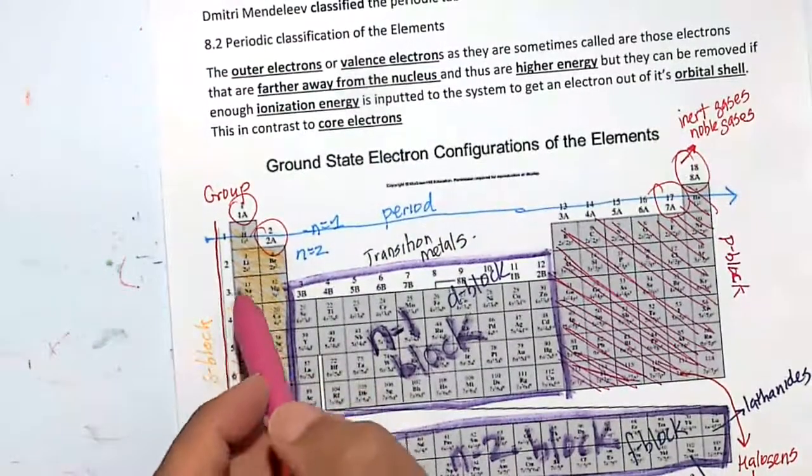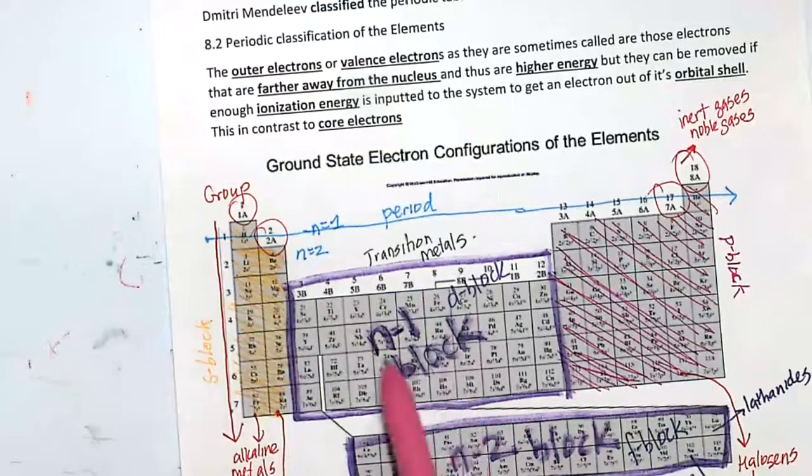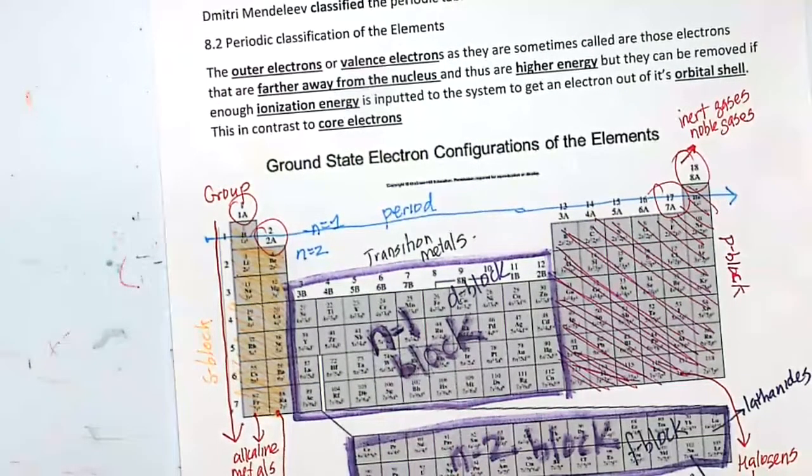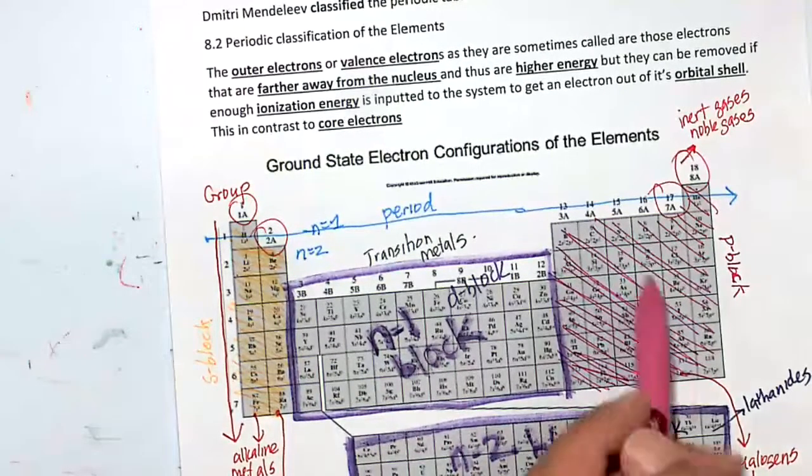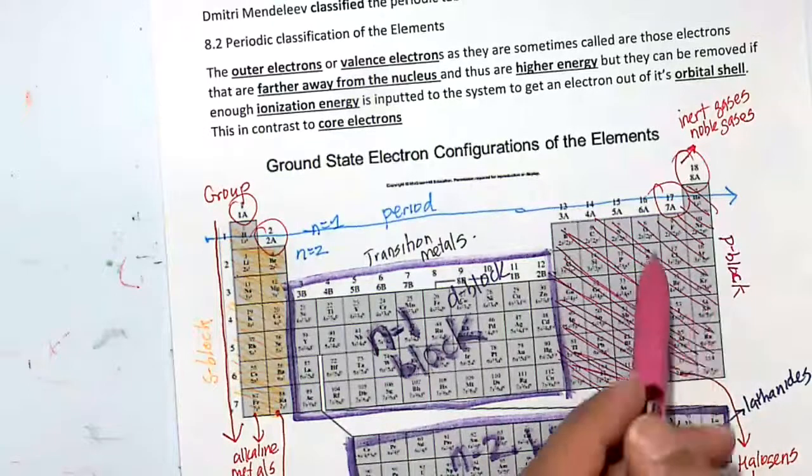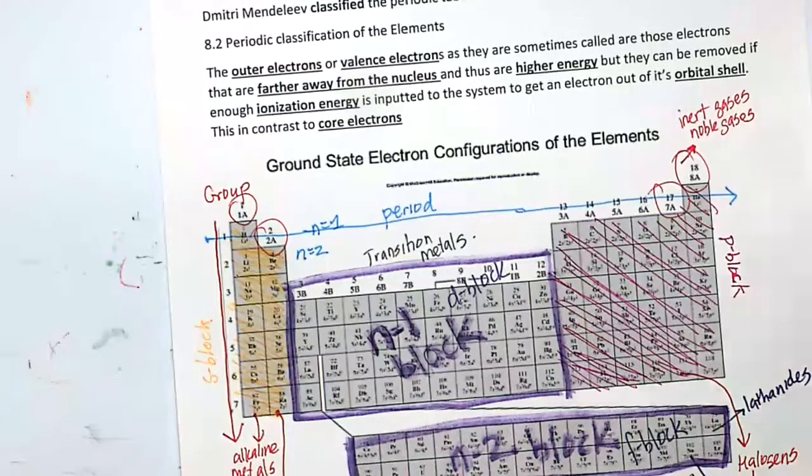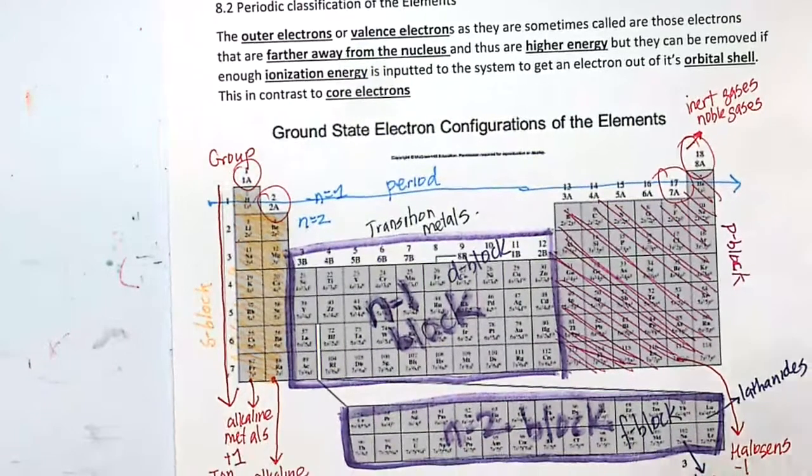We have electrons, valence electrons that go in the s orbital. Valence electrons here that go into the d orbital. Here we have valence electrons that go into the p orbital. Here we have valence electrons that go into the f orbital.